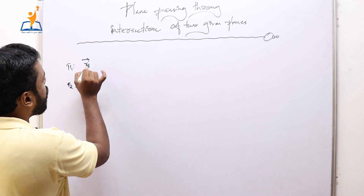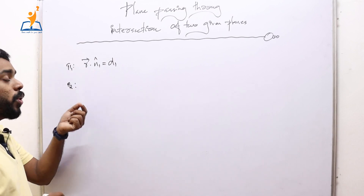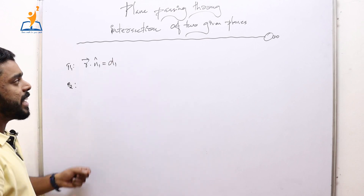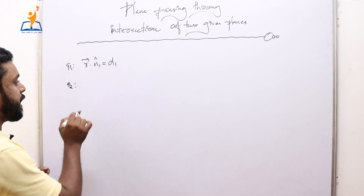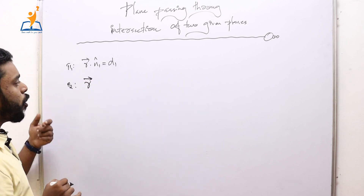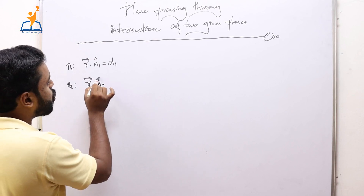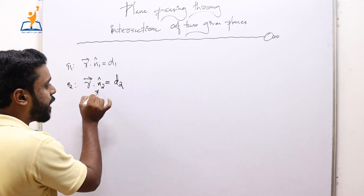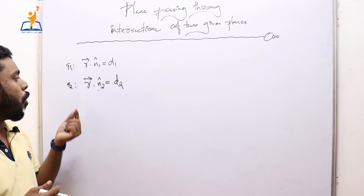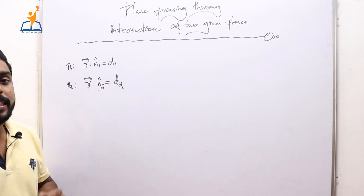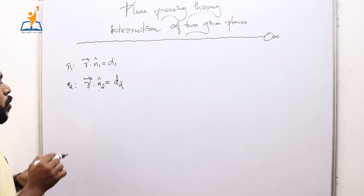Let π1 and π2 be the first two planes. Let the equation of π1 be r dot n1̂ = d1, where n1̂ is the unit normal vector to the first plane and d1 is the distance of the first plane from the origin. r is an arbitrary point in the plane. Let π2 be r dot n2̂ = d2, where n2̂ is the unit normal vector to π2 and d2 is its distance from the origin.